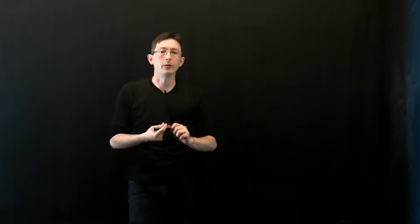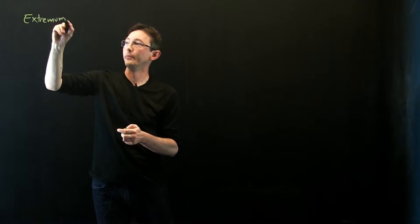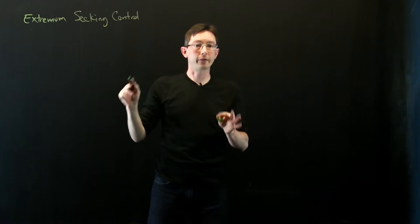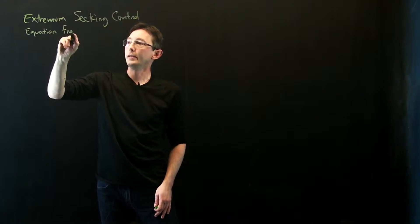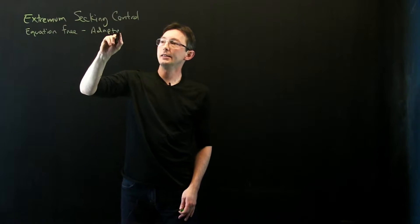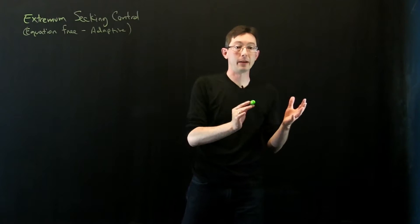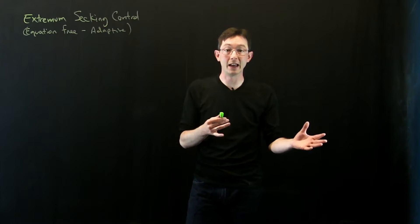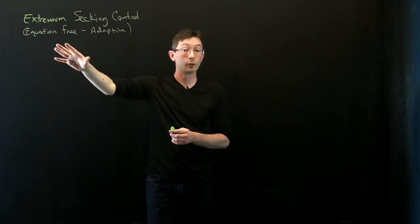What I'm going to tell you about right now is an adaptive control strategy called extremum seeking control. Extremum seeking control is an equation-free, or adaptive, control law, meaning that it doesn't require you to have a model of the system and it can adapt to slowly changing parameters. So if I have a system that ages or changes over the course of a day, extremum seeking control will be able to compensate for those parameter changes even without modeling or measuring them.